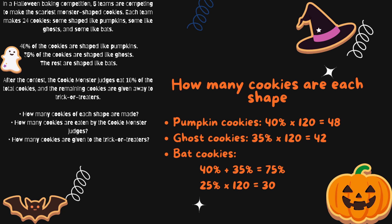Bat cookies: the remaining cookies are bats. You already have pumpkins and ghosts, which make up 75% of the cookies, so the remaining 25% are bats. 25% of 120 is 30 bat cookies.